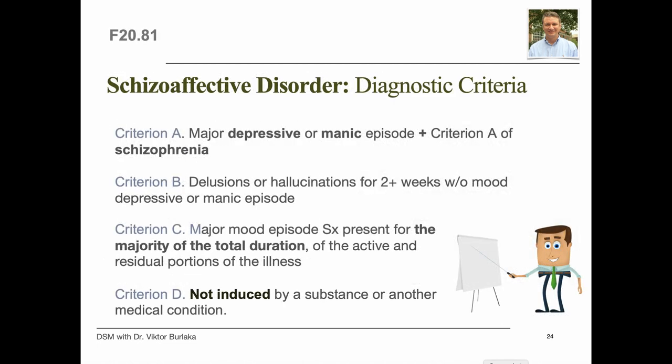For the diagnostic criteria for schizoaffective disorder, Criterion A requires an uninterrupted period of illness during which there is a major depressive or manic episode concurrent with Criterion A of schizophrenia; the major depressive episode must include Criterion A1, depressed mood. Criterion B requires delusions or hallucinations for two or more weeks in the absence of a major mood episode during the lifetime duration of the illness. Criterion C requires that symptoms meeting criteria for a major mood episode are present for the majority of the total duration of the active and residual portions of the illness.